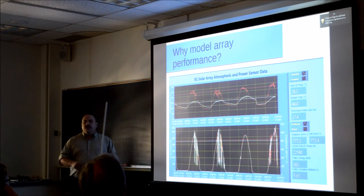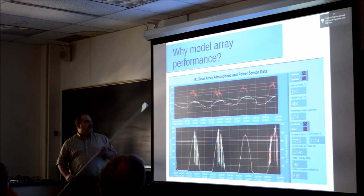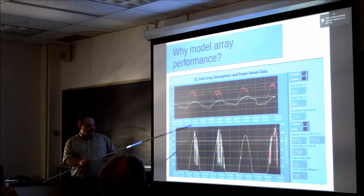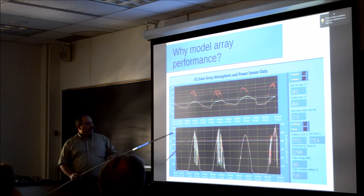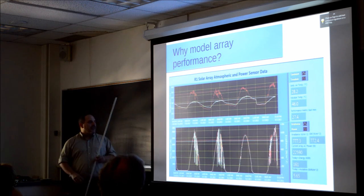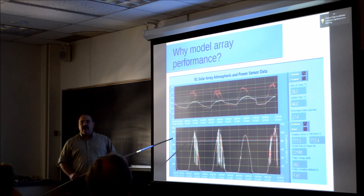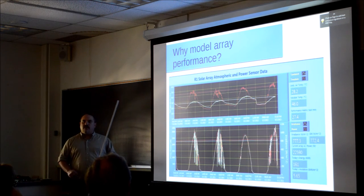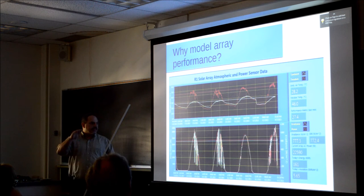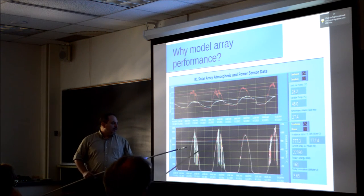When First Solar was here talking in the spring, they talked about how they actually deal with that. They actually have people running some of these models all the time, looking at weather a little bit out in order to predict what's about to happen. They keep a certain amount of capacity offline that they can bring online to adjust for these things to allow for more stability.